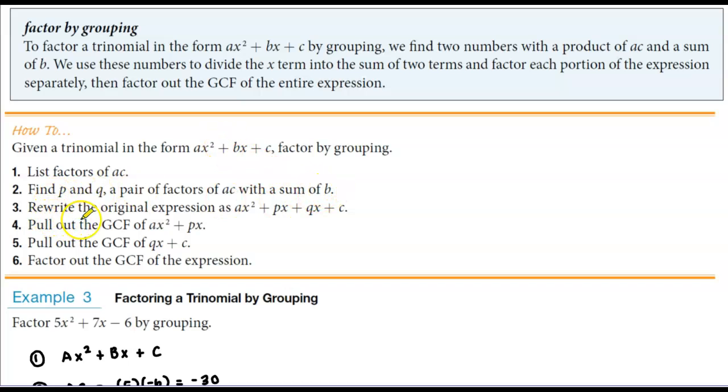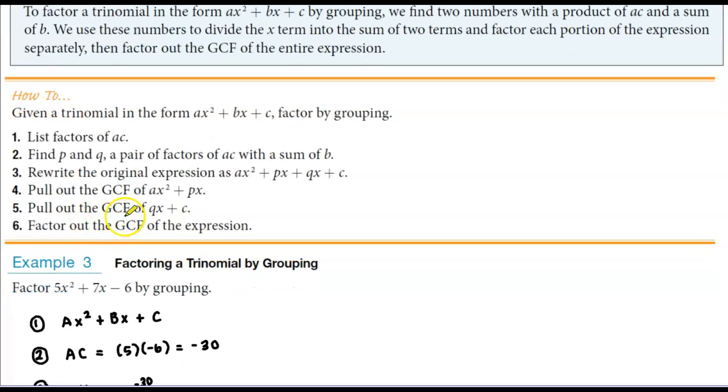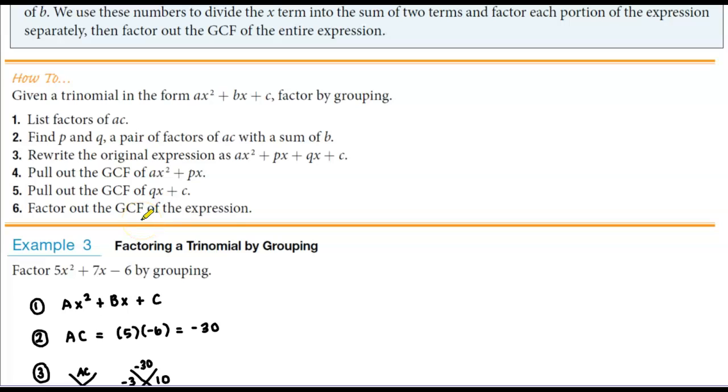Then we rewrite the original expression in four terms: ax² + px + qx + c. We pull out the greatest common factor of the first grouping, pull out the greatest common factor of the second grouping, and then factor out the greatest common factor of the expression.